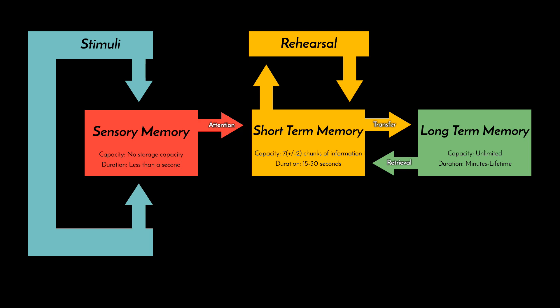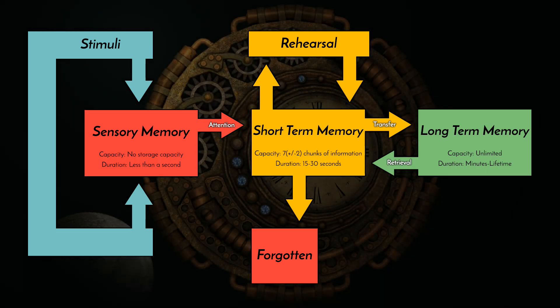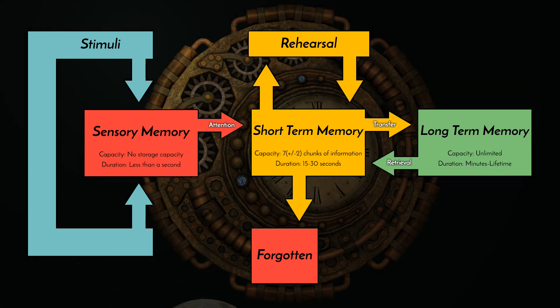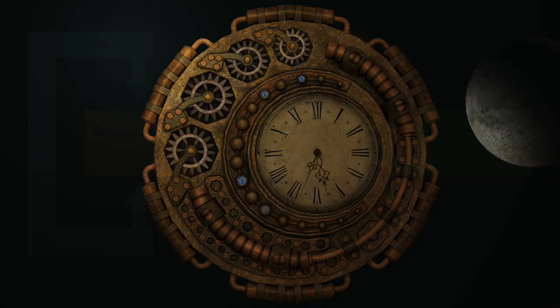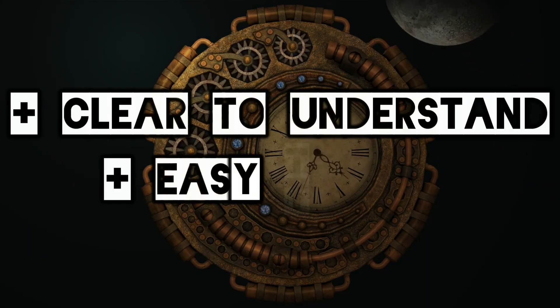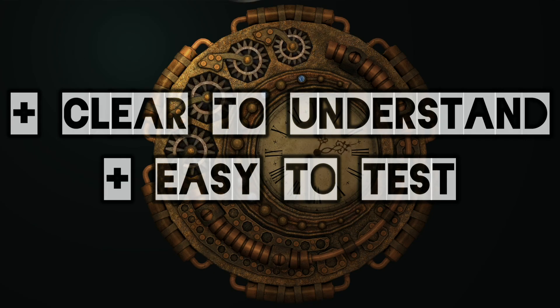Any information that makes it to short-term memory, but is not rehearsed enough to transfer to long-term memory, is simply forgotten and won't be available for later recall. Most of this content should be fairly familiar to you, as the concept of primary and secondary memory has been floating around since the time of William James in 1890. A key strength of this model is that it is very clear to understand and test.